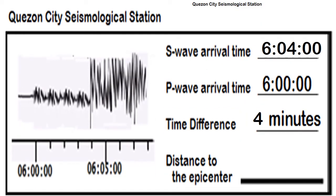So we have Kensington City Seismological Station. The S wave arrival time is at 6:04, while the P wave arrival time is at 6:00. The time difference, by simple subtraction, is 4 minutes. We're going to do the same thing with the next seismogram.